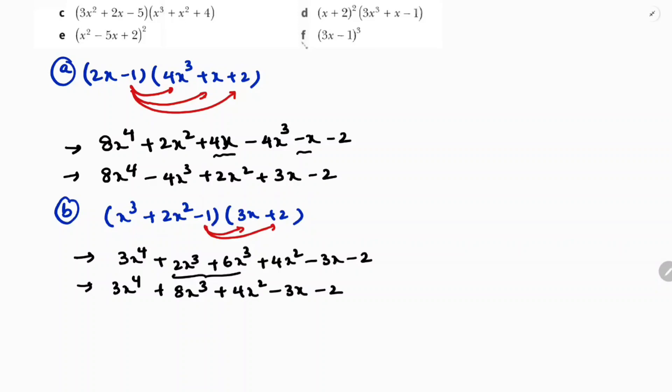This is the answer. It is clearly: 3x⁴ + 8x³ + 4x² - 3x - 2.